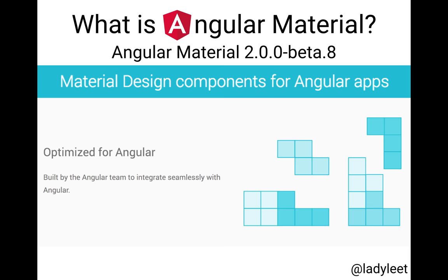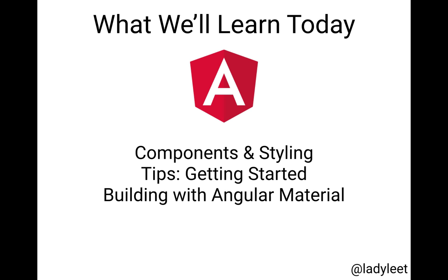So Angular Material is currently on version 2.0. The last release was July 6, 2017, and what they are are Material Design Components for Angular applications. These components are optimized for Angular — they are built by the Angular team to integrate seamlessly with Angular, so they work really, really well, and they have the Material Design UI with them.